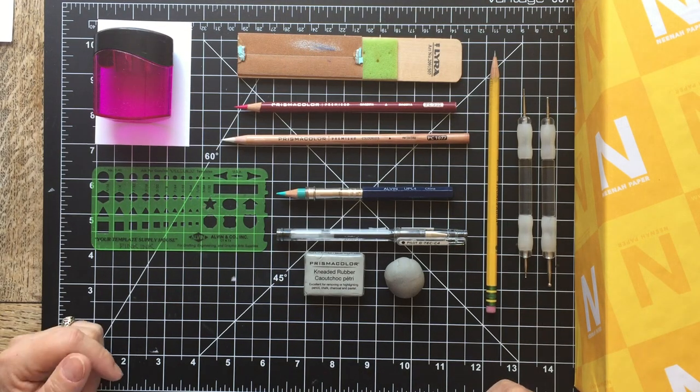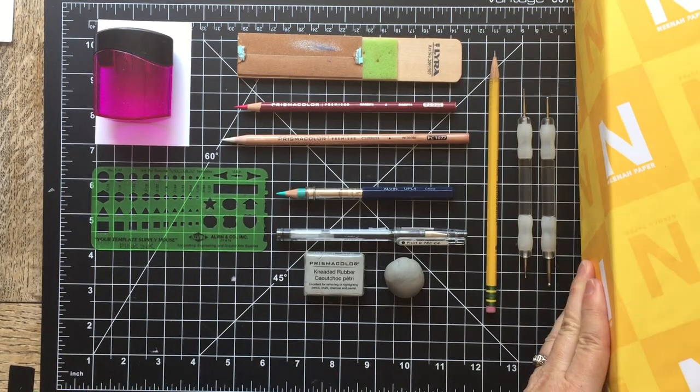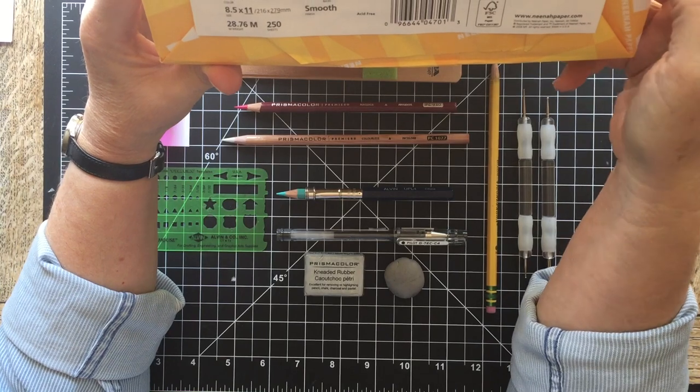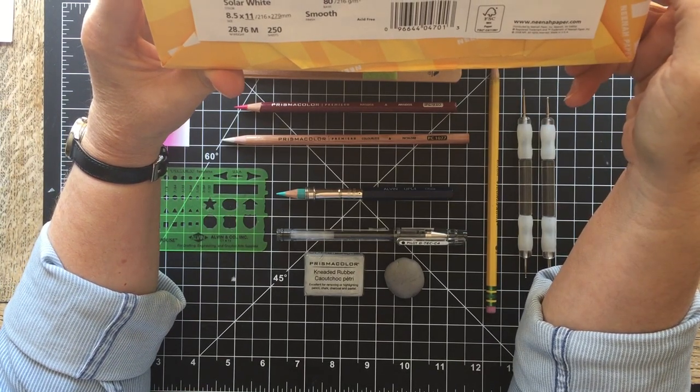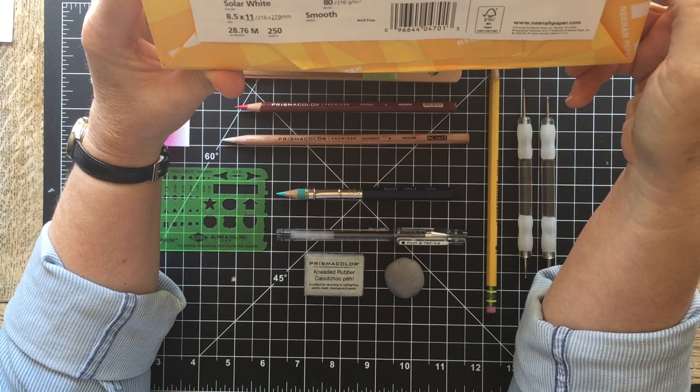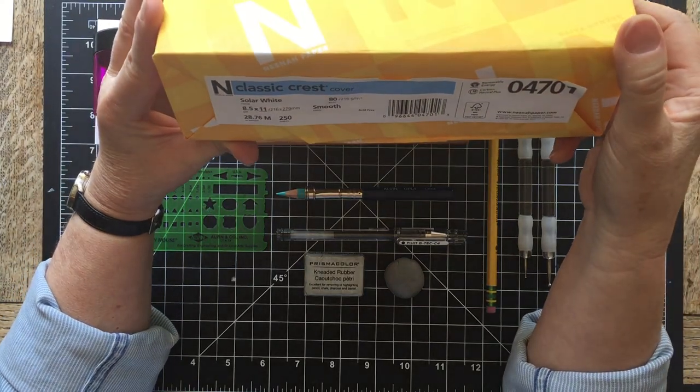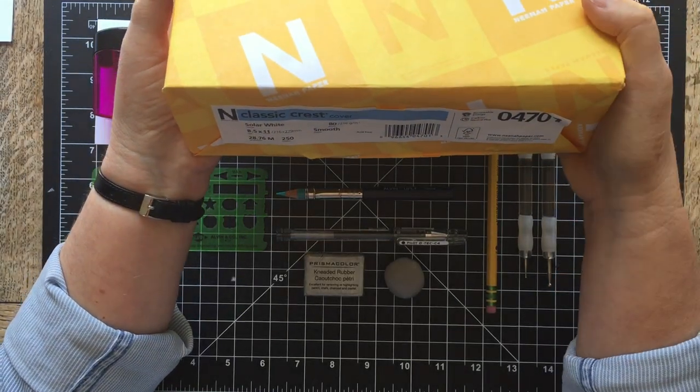Everything starts on a great piece of paper. The paper that I like to use is this one. This is Neenah 80-lb Classic Crest coverweight paper in a solar white color, and it is just a wonderful foundation for both stamping and coloring, and it has just the right amount of tooth to it.